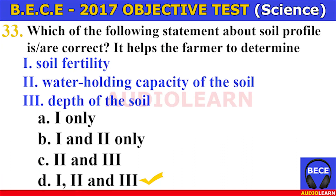Number thirty-two. The part of a living cell which is semi-permeable is A. Cytoplasm, B. Nucleus, C. Protoplasm, D. Cell membrane. The answer is D. Cell membrane. Number thirty-three. Which of the following statements about soil profile is correct? It helps the farmer to determine I. soil fertility, II. water holding capacity of the soil, III. depth of the soil. The answer is D — all of I, II, and III.